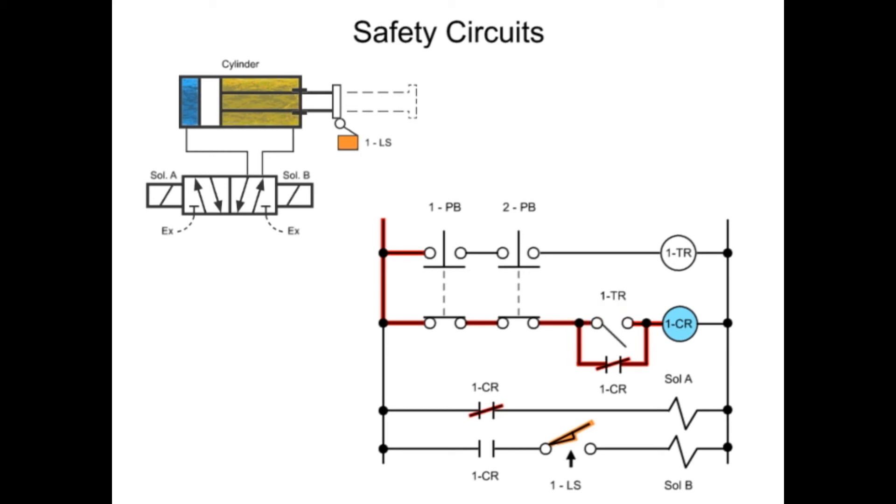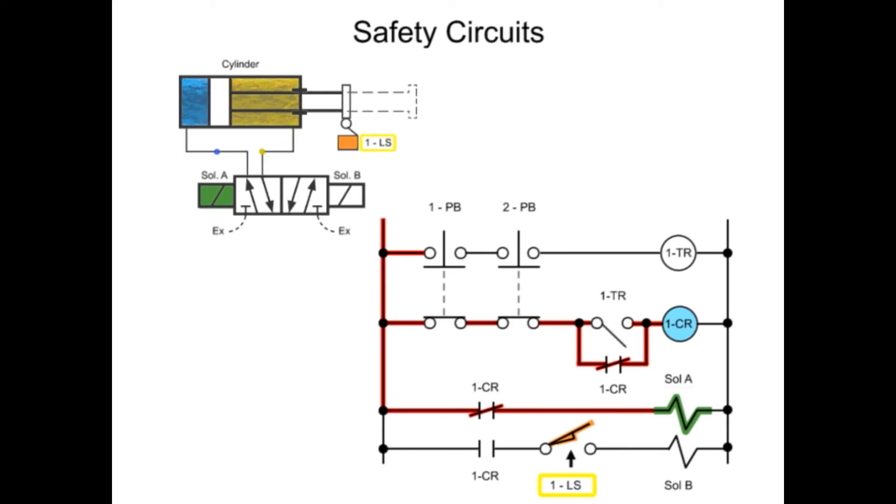With a control relay energized, power flows to solenoid A. Solenoid A shifts the valve to allow fluid into the blind end of the cylinder. The cylinder begins to extend the cam and releases limit switch 1, allowing it to close.